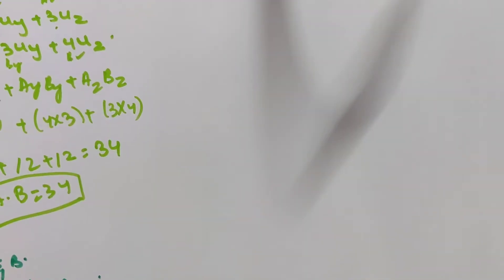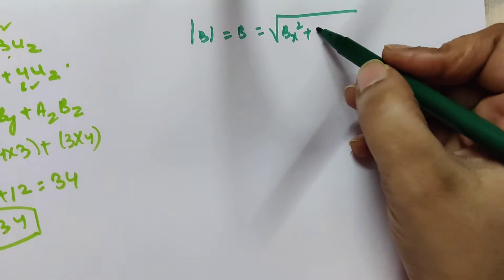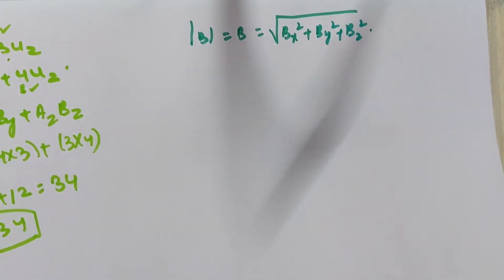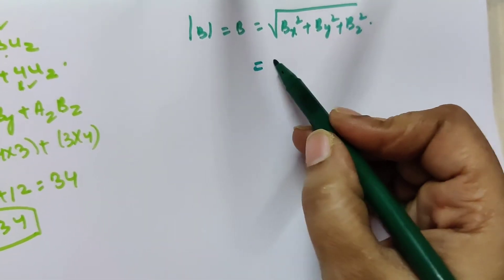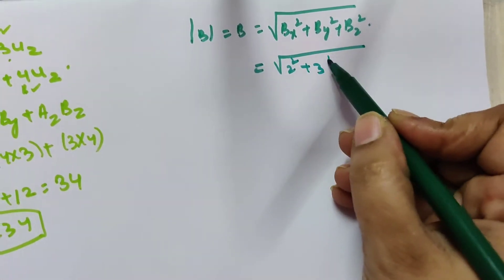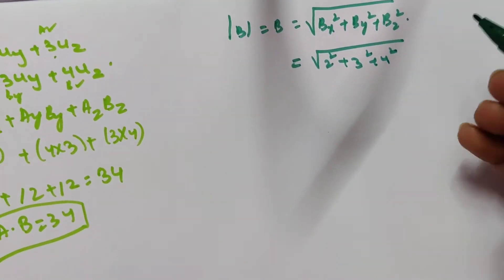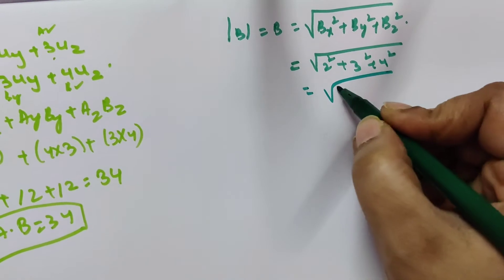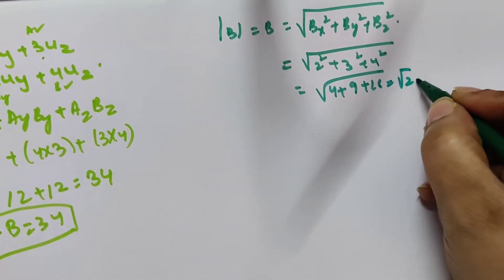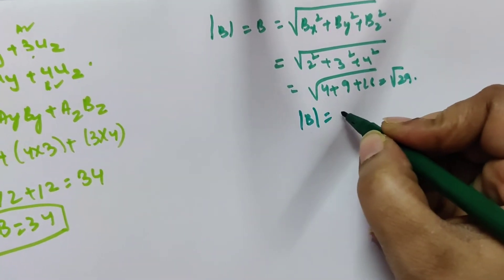Similarly, |B| = √(Bx² + By² + Bz²). From the given B values: |B| = √(2² + 3² + 4²) = √(4 + 9 + 16) = √29.